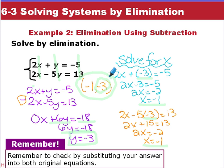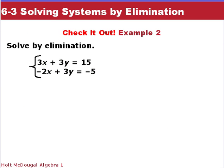Checking our second equation with y equals negative 3 also gives x equals negative 1. So our solution is at the point (negative 1, negative 3). Always write your answer as an ordered pair — it is the point where the lines intersect. Here's your chance to solve this by elimination.